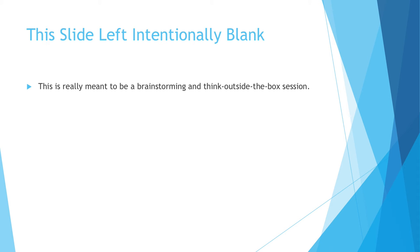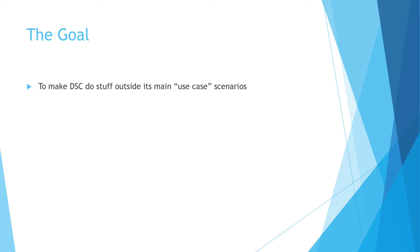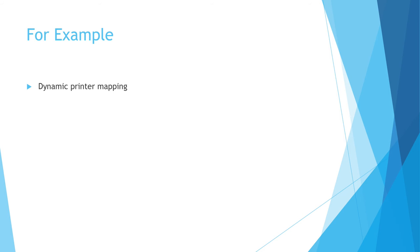This is really meant to be a brainstorming session, a think-outside-the-box session. Let's talk about some things that we'd love for DSC to be able to do for us as a business. Forget the technology — anything should be possible if we have enough money. Let's think about what we want it to do and then get a little bit outside the envelope. I'll kick things off with an example: dynamic printer mapping.